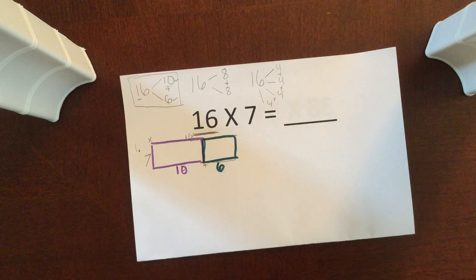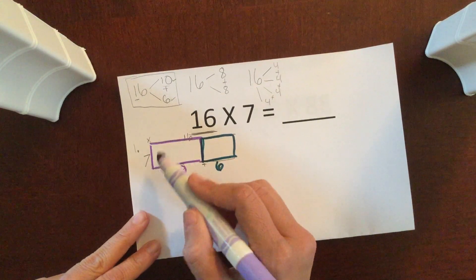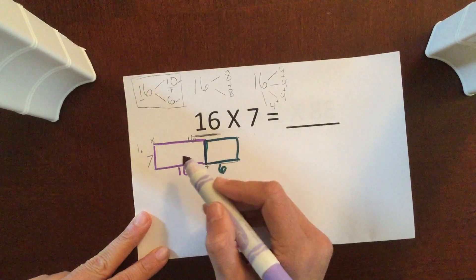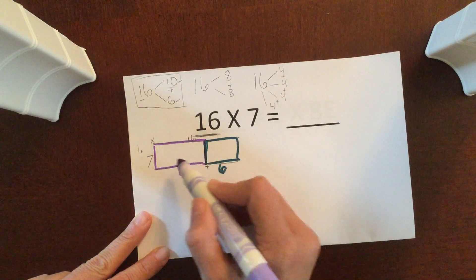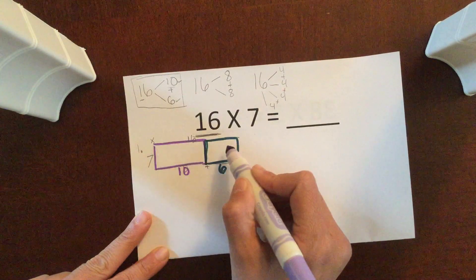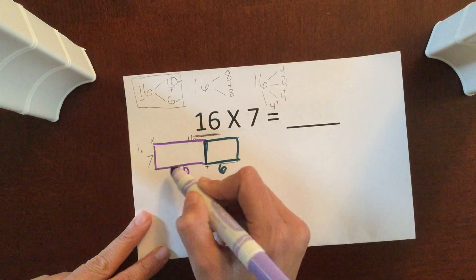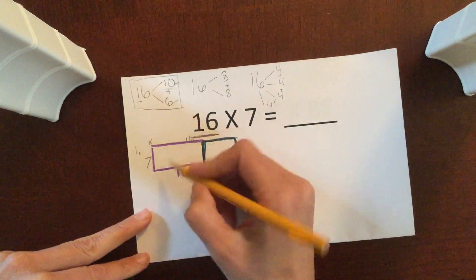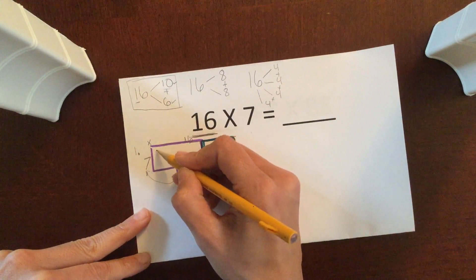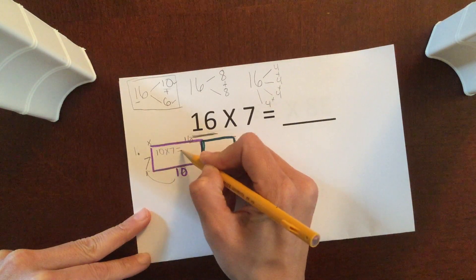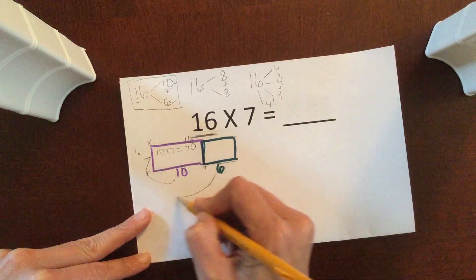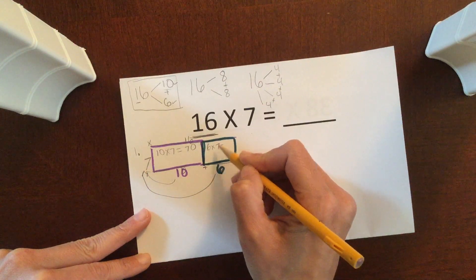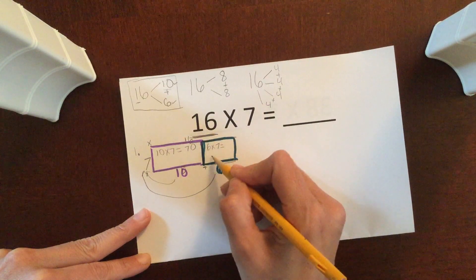So now I need to figure out what is each, these are my two arrays, my two rectangles, what is going to be the product of each one. So instead of this 16, I have it in 10 and 6. So I'm going to be multiplying 10 times 7, which I know is 70. And then I have to multiply my 6 times 7, which 6 times 7 is an easier fact than 16 times 7. 6 times 7 is 42.